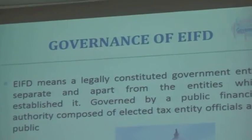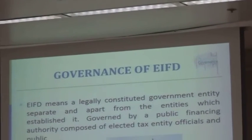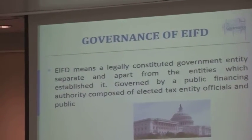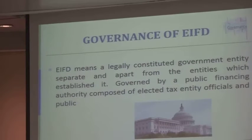Let's talk about governance of the EIFD. The EIFD is going to be governed by a legislative body called the Public Financing Authority. If you have one taxing entity participating, this authority is comprised of three members of the legislative body of that participating taxing entity and at least two members of the public. If you have multiple taxing entities, a majority of the Public Financing Authority's membership will consist of folks from the legislative bodies of the participating taxing entities, plus at least two members of the public.